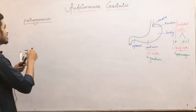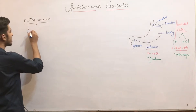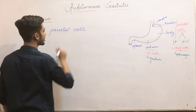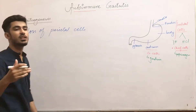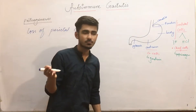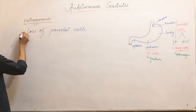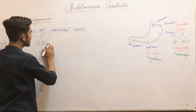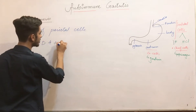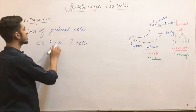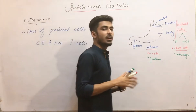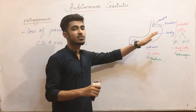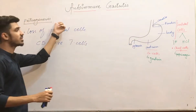Now, in autoimmune gastritis, there is loss of parietal cells — or loss of parietal cell components, which are the proton pump and the intrinsic factor. This loss occurs because CD4-positive T cells damage the parietal cells. Autoimmune gastritis affects the body as well as the fundus, so the cells in those regions — the parietal cells and chief cells — are also affected, mainly the parietal cells.